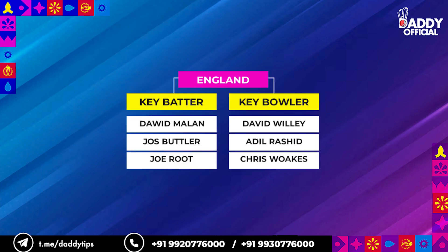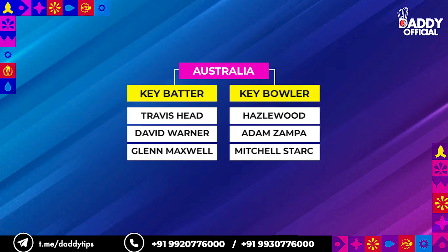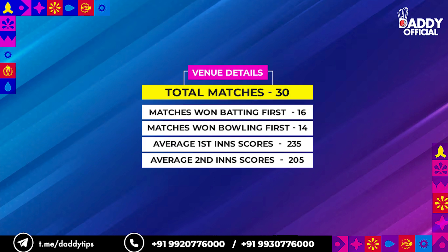Australia and England's key batsmen and key bowlers list is on the screen. If we talk about venue details, the total is 30 matches, out of which 16 matches were won batting first and 14 matches were won batting second. The average 1st innings score is 235 and the average 2nd innings score is 205.